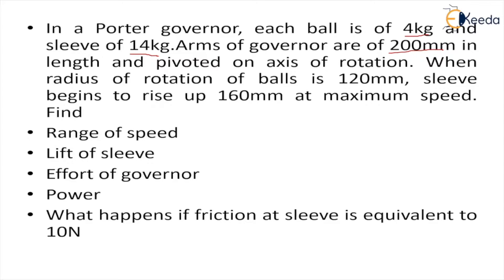The radius of rotation when the sleeve begins to rise at maximum speed is 160 mm, and initially it's 120 mm. So we have to calculate range, lift, effort, power, and the effect of friction on sleeve.